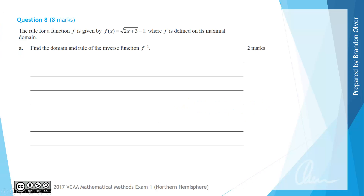For question 8, the rule for the function f is given by f(x) equals the square root of 2x plus 3, subtract 1, where f is defined on its maximal domain. For part a we are asked to find the domain and the rule for the inverse function of f. We need to give a rule for the inverse function f⁻¹(x) and also state its domain for x as an element of some domain.